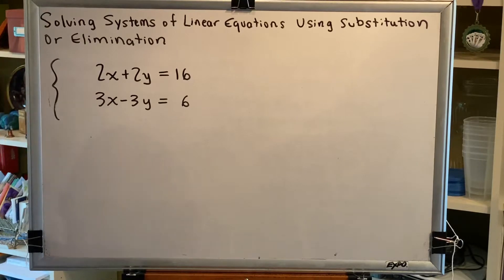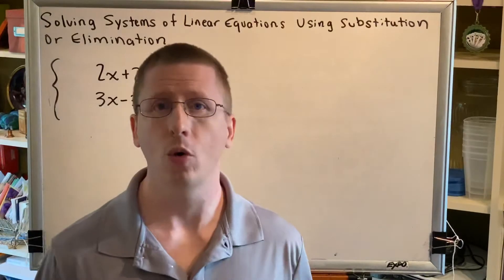2x plus 2y equals 16, 3x minus 3y equals 6. Okay, first decision, should we use substitution or elimination?